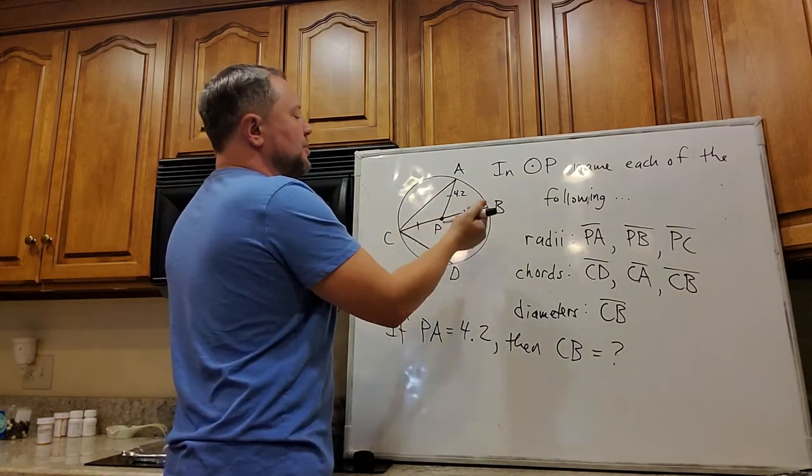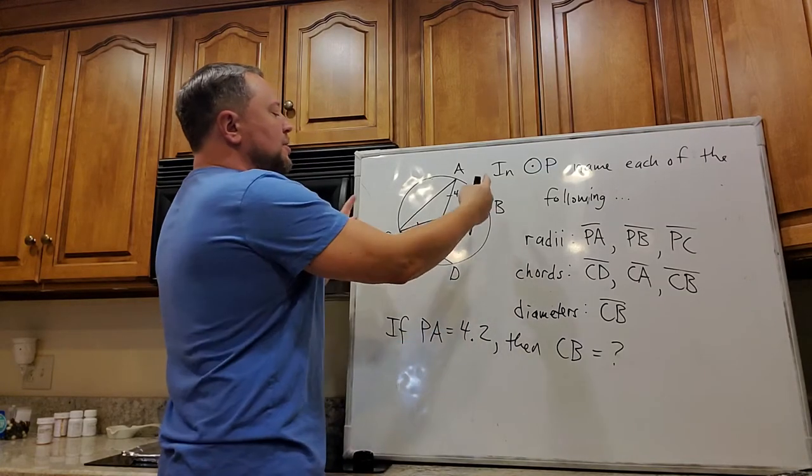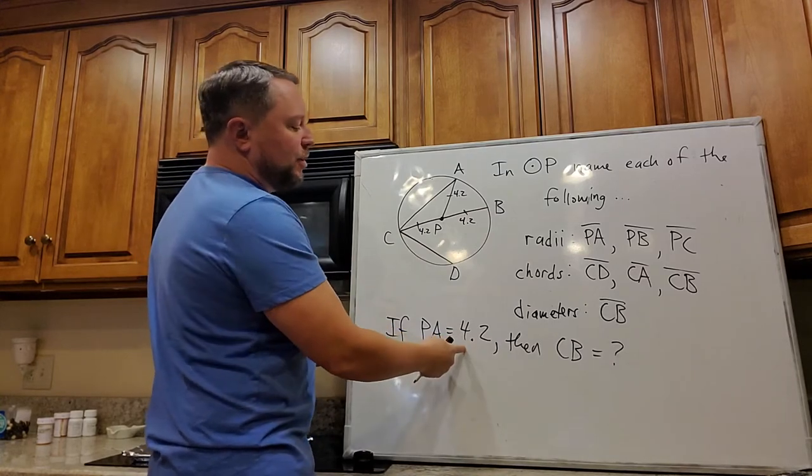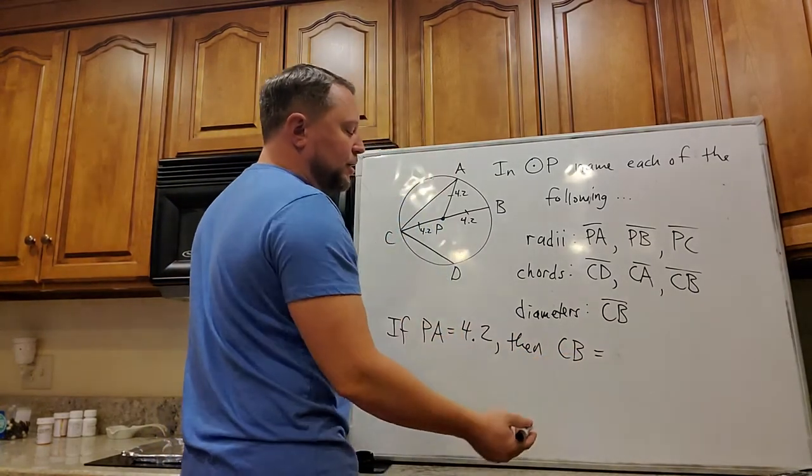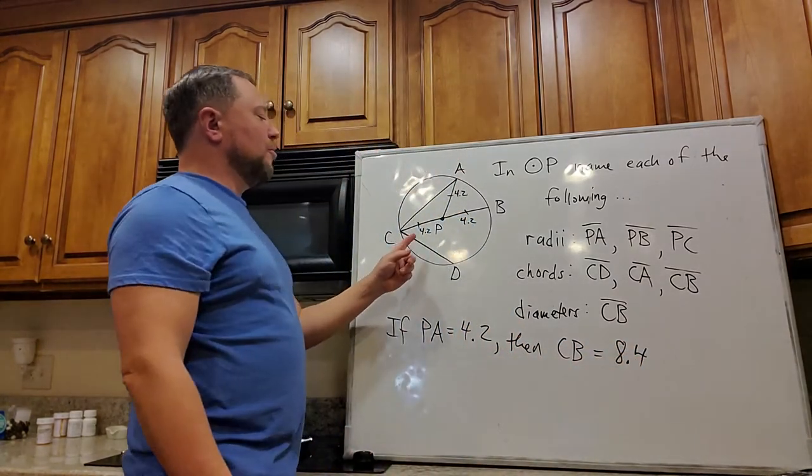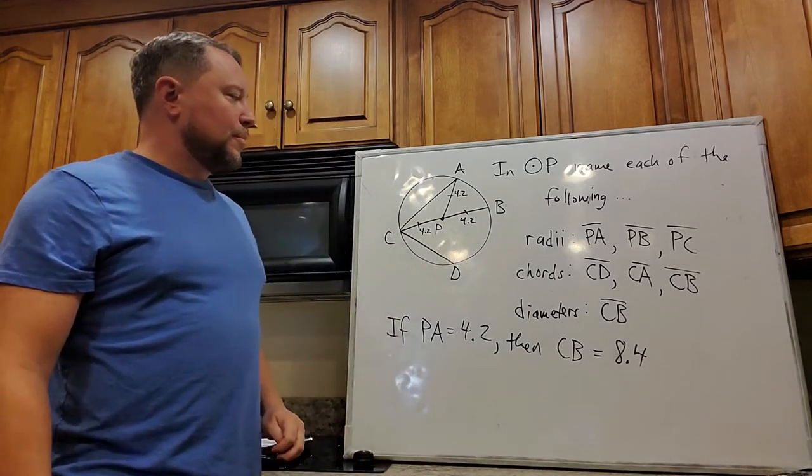Okay, if I did ask you, then, to name any and all diameters in particular, well, as you can see, this picture only has one, and it's CB. So, it qualifies as both. It's a diameter and it's a chord. Alright, now, what if I gave you a problem like this? What if I told you, for example, that the length of segment PA, let's say, if PA equals 4.2, then let's see if you can figure out what CB has to equal. Okay, now, notice that PA, that I named here, is a radius. Okay, and the CB that I want you to find is not a radius, but instead a diameter.